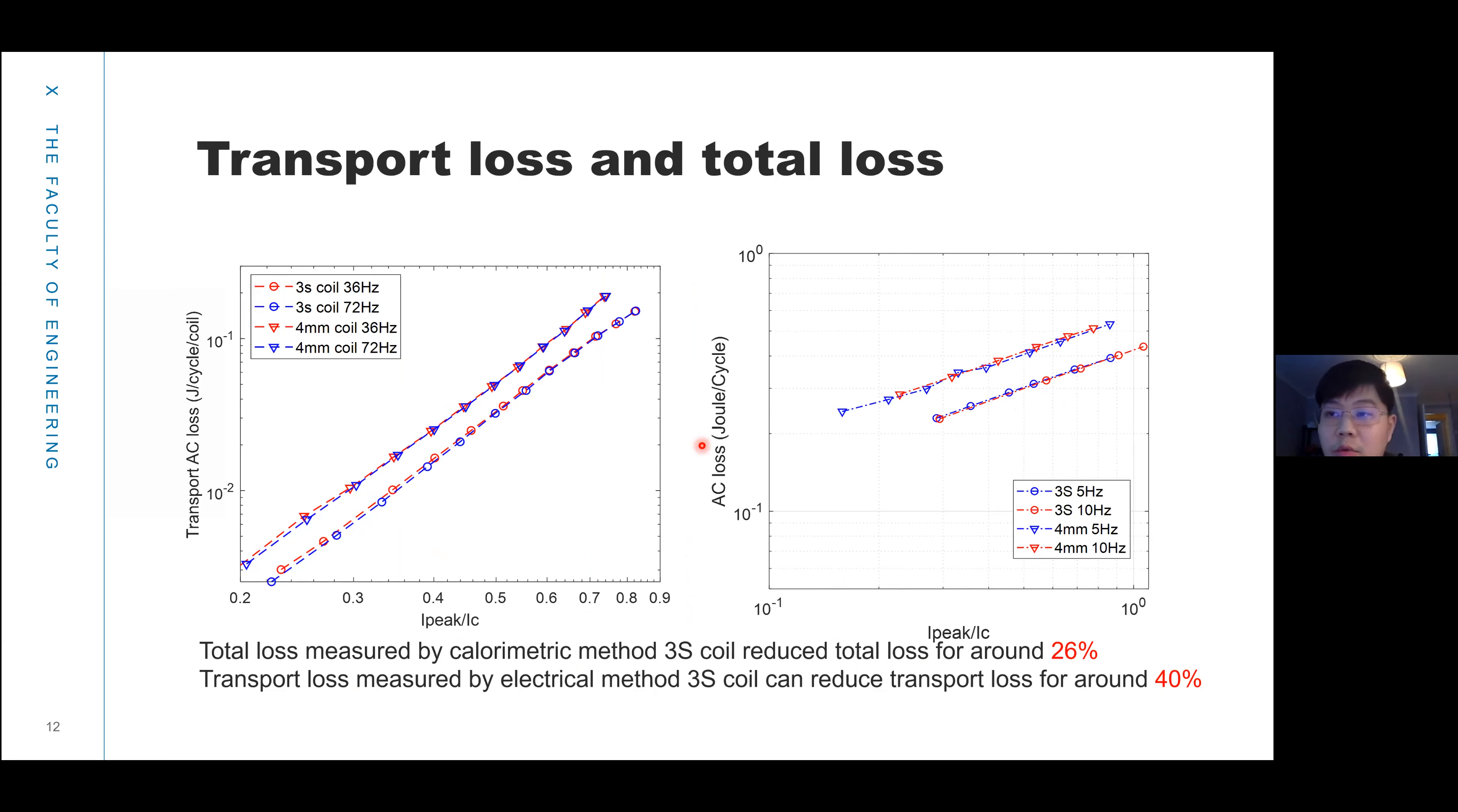We put both coils into the test platform and measured the transport loss and total loss. We found the transport loss, measured at 36 hertz and 72 hertz for both coils, can reduce around 40 percent. We put the coil into the HTS machine platform and ran it at different frequencies and different applied transport currents. We found the total loss of the 3S coil can reduce by around 26 percent.